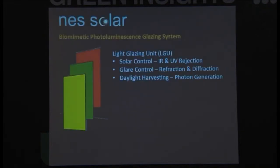So the natural solution. So this is where I now become a salesman. So NES Solar is a biomimetic photoluminescent glazing system. Basically, it consists of three sections. The first layer is solar control, infrared and UV rejection. The second is glare control through refraction and diffraction. And the third part is daylight harvesting by photon generation.